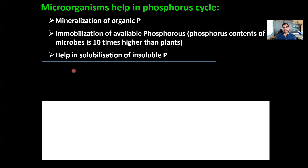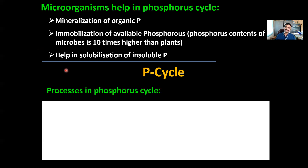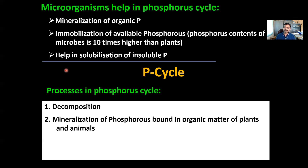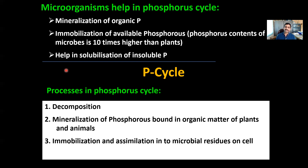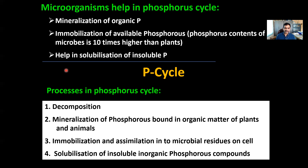Apart from these, microorganisms are also known to help in conversion of fixed or plant-unavailable forms of phosphorus into plant-available forms, which is known as solubilization of insoluble phosphorus. By all these mechanisms, microorganisms help in the phosphorus cycle and in phosphorus nutrition to plants. Coming to the phosphorus cycle, similar to other nutrient cycles, the phosphorus cycle also has some processes: decomposition, mineralization of phosphorus bound in organic matter of plants and animals, immobilization or assimilation, and solubilization of insoluble inorganic phosphorus compounds.